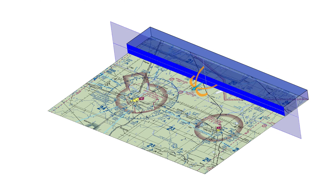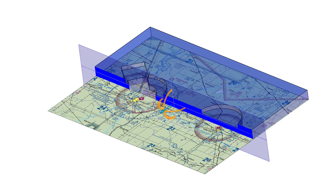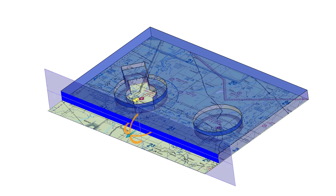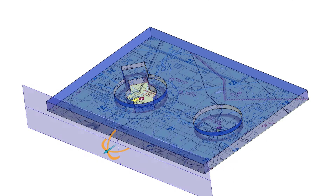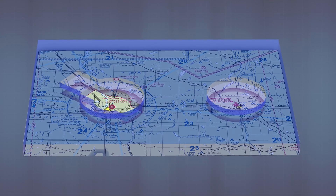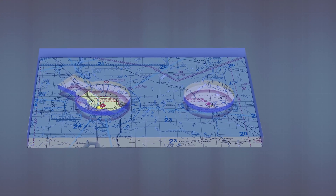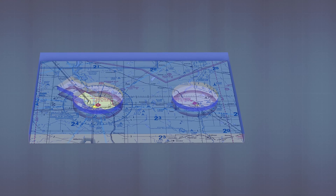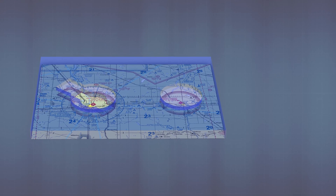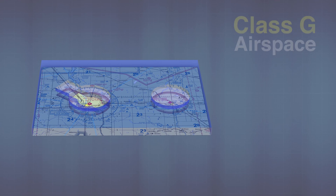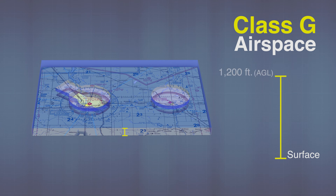Think of the Earth's surface and imagine that we flooded it with water, 1,200 feet deep. The entire continent is covered by a layer of water from the ground up to 1,200 feet. This water would represent class G airspace, starting at the surface and going up to 1,200 feet above ground level, or AGL.